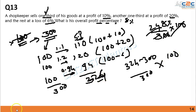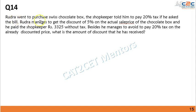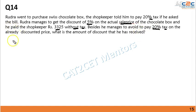Rudra went to purchase a Swiss chocolate box. The shopkeeper told him to pay 20% tax if he asks for a bill. Rudra manages to get a 5% discount on the actual selling price (without tax), since not everyone needs a bill. He already paid the shopkeeper 3325 rupees without the tax, thus avoiding 20% tax.